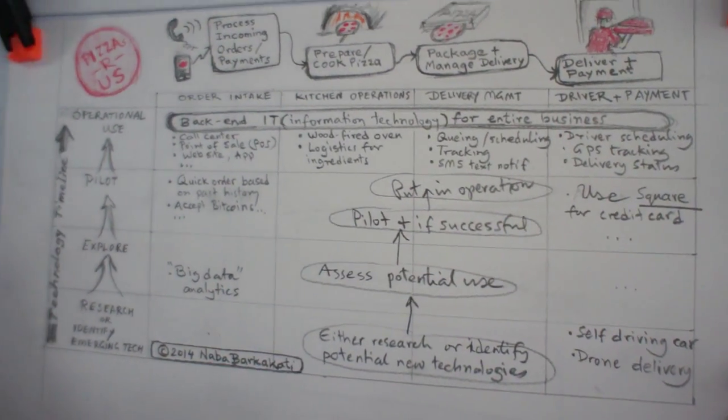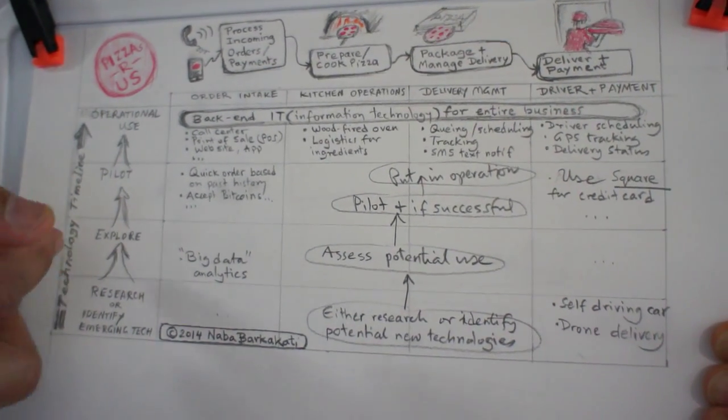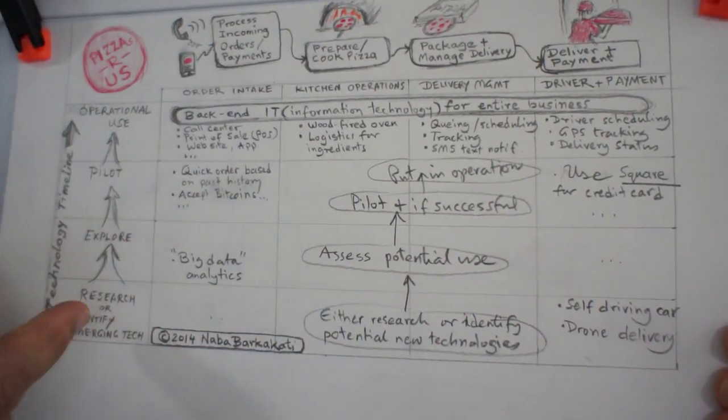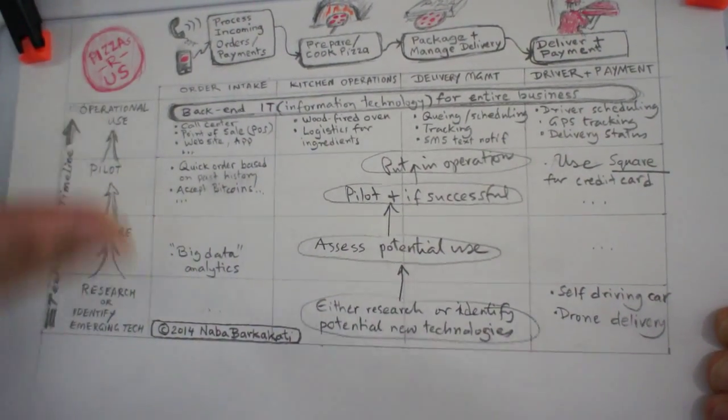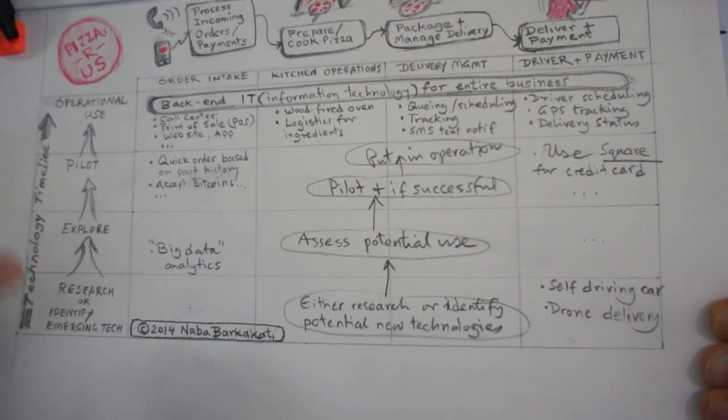And the whole point is that as a CTO or a chief technologist, you're keeping an eye on all the new technologies that are emerging, that are relevant to your different areas of your operations, and bringing them in, basically planning to bring them in.